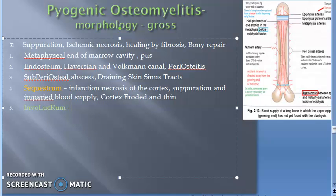It will encase the necrosed bone. So it is the encasing sheath around the necrosed bone. Around the necrosed bone there is an encasing sheath — this is the Involucrum.